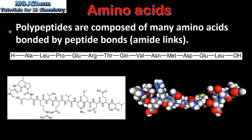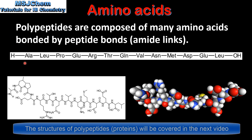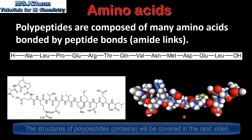Finally we look at polypeptides. Polypeptides are composed of many amino acids bonded by peptide bonds or amide links. Here we can see the primary structure of a polypeptide, which shows the sequence of the amino acids. Each amino acid bonds in a condensation reaction, producing a molecule of water and forming a peptide bond. At the bottom we can see the structural formula of the polypeptide, and on the right we have the space-filling model.